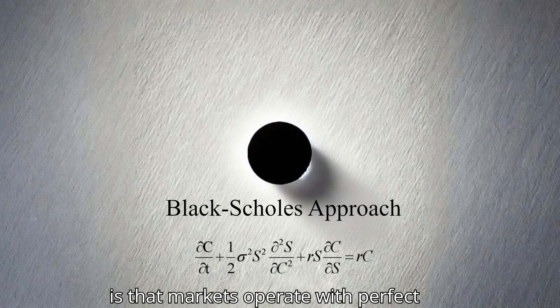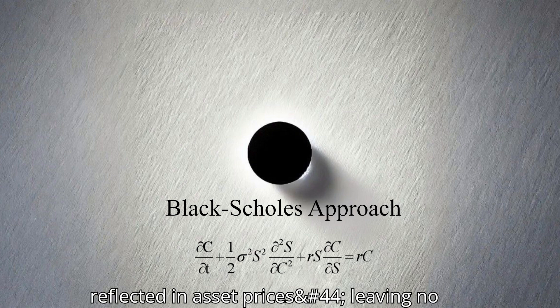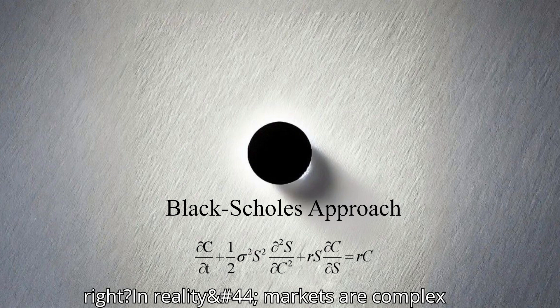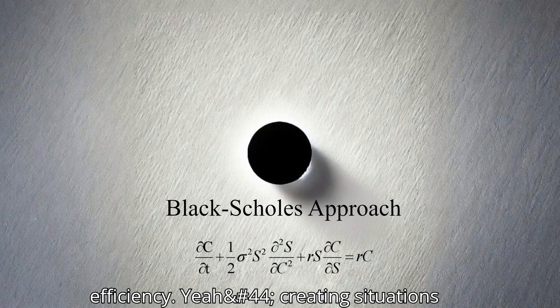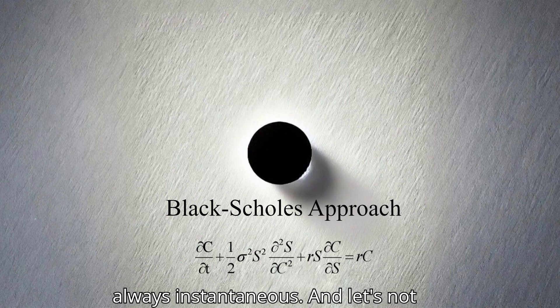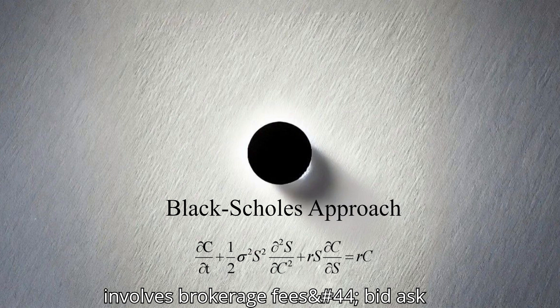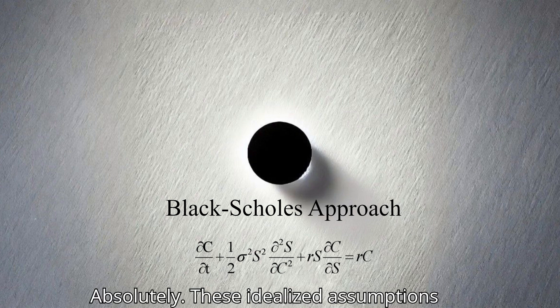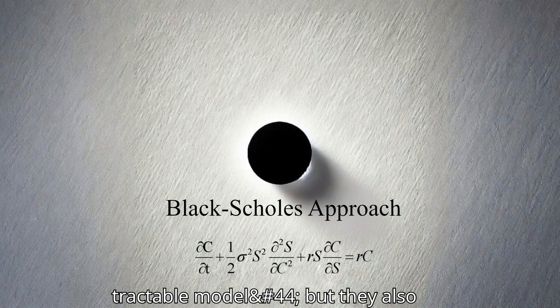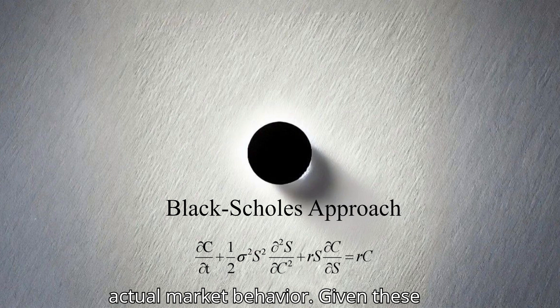What other assumptions are baked into the Black-Scholes model that might not hold up under scrutiny? Another key assumption is that markets operate with perfect efficiency. This implies that all relevant information is instantly reflected in asset prices, leaving no room for arbitrage opportunities. In reality, markets are complex systems with varying degrees of efficiency, creating situations where information dissemination isn't always instantaneous. And let's not forget transaction costs, which the Black-Scholes model conveniently ignores. In the real world, trading involves brokerage fees, bid-ask spreads, and other costs that can eat into profits and impact pricing.